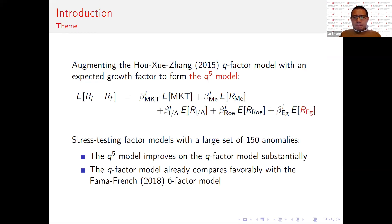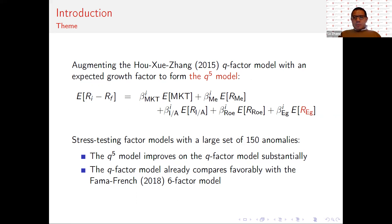In this article, we augment our Q-Factor model with an expected growth factor to form the Q-5 model. In the Q-Factor model, we have four factors: market factor, size factor, investment factor, and the ROE factor, in which ROE stands for Return on Equity. In this paper, we augment the Q-Factor model with the new expected growth factor. We then conduct a large-scale empirical horse race with a large set of 150 significant anomalies compiled in our prior work on replicating anomalies. We show that the Q-5 model improves substantially on the Q-Factor model in accounting for this set of significant anomalies. In addition, the Q-Factor model already compares reasonably well with the Fama-French six-factor model.